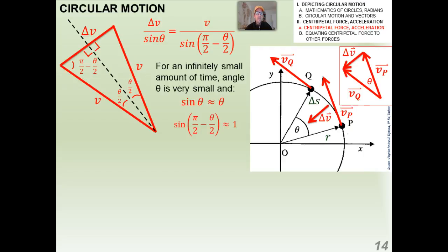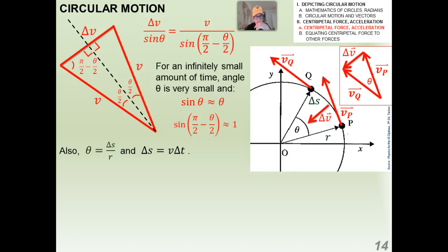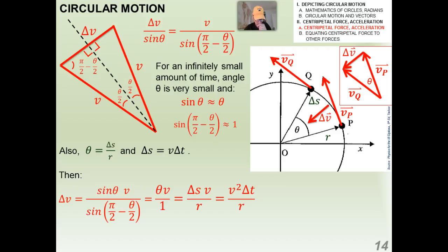For an infinitely small amount of time, theta is very small, and for very small angles in radians, sine of theta is approximately equal to theta. And because theta is very small — nearly zero — sine of (pi over 2 minus theta over 2) is approximately equal to sine of pi over 2, which is 1. Also remember that theta equals arc length over R (the radius), and that V equals delta S over delta T, so delta S equals V times delta T.